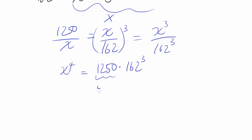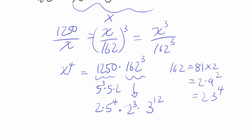1250: 125 is 5 cubed, and you're multiplying it by 10, which is 5 times 2. So this thing comes out to be 2 times 5 to the fourth. 162 is same thing as 81 times 2, which is 2 times 9 squared, or 2 times 3 to the fourth. So we have 162 cubed. We have three twos and 4 times 3, which is 12 threes.